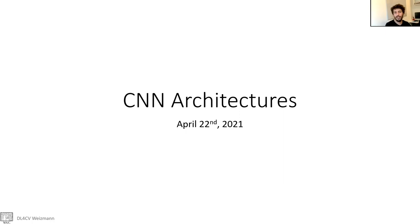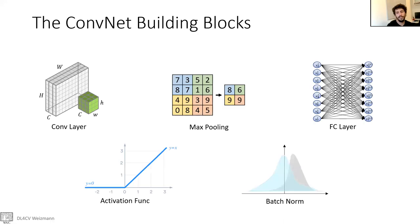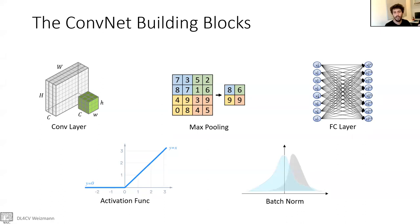Welcome everyone. Today we're going to talk about CNN architecture. So far, during the previous lecture, we learned about the components of convolutional neural networks. We talked about convolutional layers, max pooling, and batch normalization, but we didn't discuss how to combine those components together to create a convolutional neural network. This task is actually quite hard — there are many possibilities on how we can combine those components together, especially when taking into account the number of inner parameters of each component.